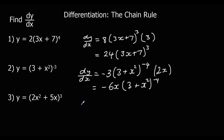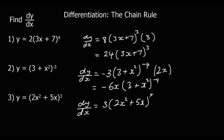Question 3: differentiate around the bracket, so 3 on the outside, leave the bracket, take one off the power so down to squared, then multiply by the bracket differentiated which is 4x plus 5. We don't need to simplify any further, so there's our answer.